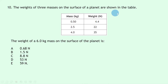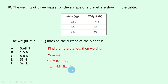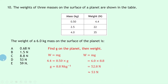Question 10 gives weights of three masses on a planet's surface. Using W = mg with the first row (0.5 kg, 4.4 N): g = 4.4 ÷ 0.5 = 8.8 N/kg. Then for a 6.0 kg mass: W = mg = 6.0 × 8.8 = 52.8 N, approximately 53 newtons. This gives answer D.